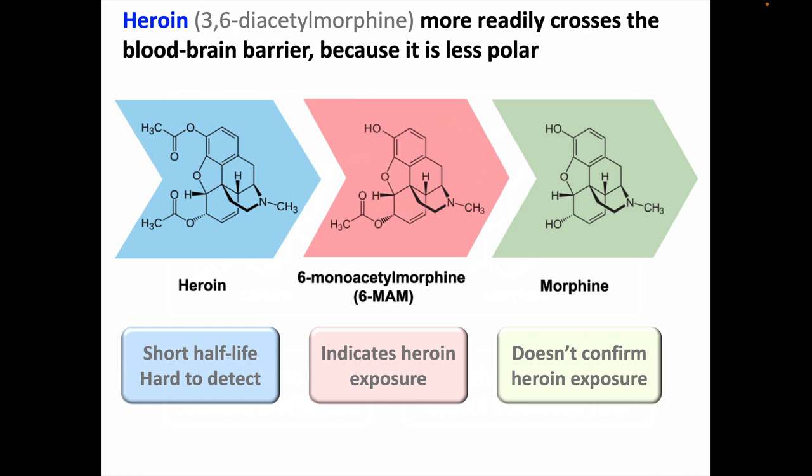Heroin is diacetylmorphine, so it has acetyl groups covering up the more polar hydroxyl groups in morphine. Heroin is therefore less polar and crosses the blood-brain barrier more readily than morphine, which may help explain its greater abuse potential. Heroin is then deacetylated into morphine in a stepwise fashion, and the morphine continues to have CNS effects. Toxicologic testing might be done to determine why a patient had a positive drug screen for opioids — was it because of therapeutic drugs they were given, or was it due to suspected heroin use? It's very difficult to detect heroin because it has a short half-life. If you detected morphine, that could be from morphine, codeine, or heroin exposure. But if you found monoacetylmorphine, that's going to be a metabolite of heroin — the human body doesn't add acetyl groups to morphine, it only removes them from heroin.